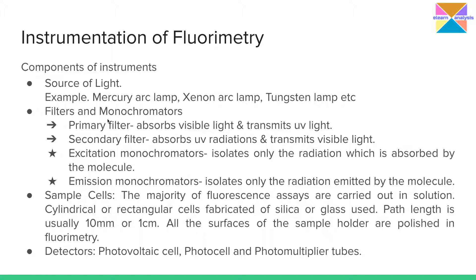Similarly, in spectrofluorimeters, we have monochromators as wavelength selectors. We have two different monochromators: the excitation monochromator and the emission monochromator, both used within a single instrument. The excitation monochromator isolates only the radiation absorbed by the molecule, and the emission monochromator isolates only the radiation emitted by the molecule. These two make up one monochromatic system in spectrofluorimeters, whereas primary and secondary filters make up the wavelength selector system in fluorometers.